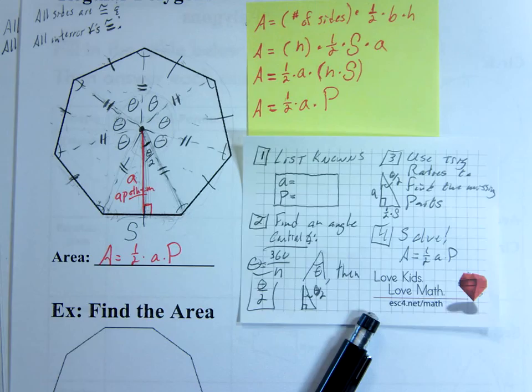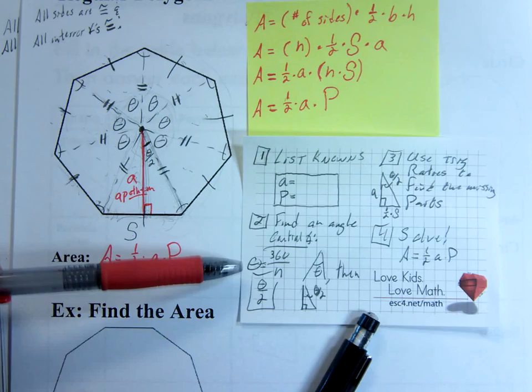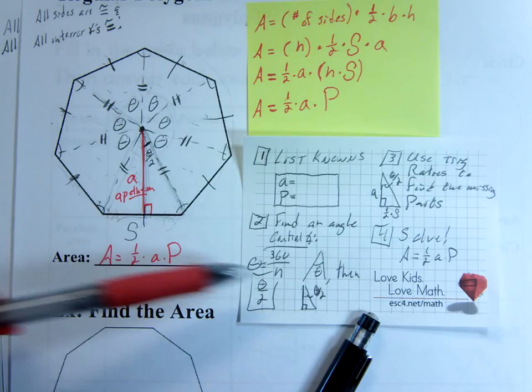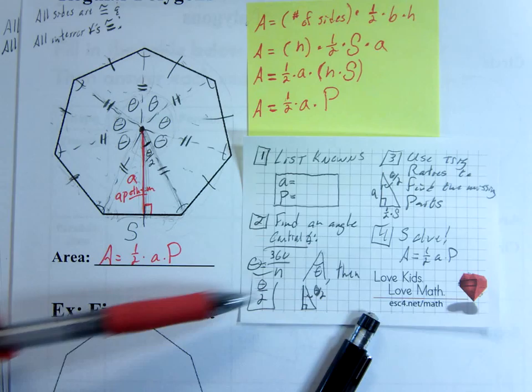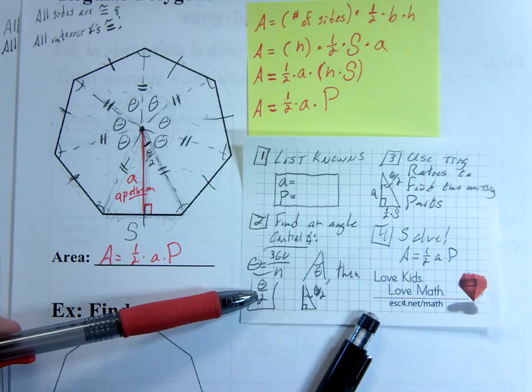Once you've listed any of your knowns, the next thing we have to do is we need to find an angle. And you already walked me through how to find this angle. You said take 360, divide it by the number of sides, and that will get me theta. But in order to find the angle we're going to use, we have to take theta and divide it by 2. And that gives us this angle here, part of a right triangle.